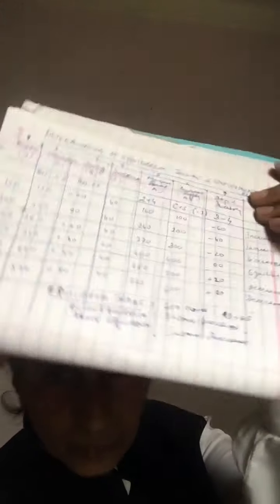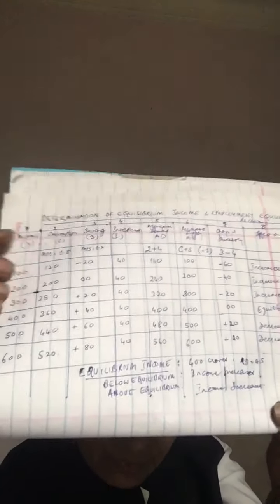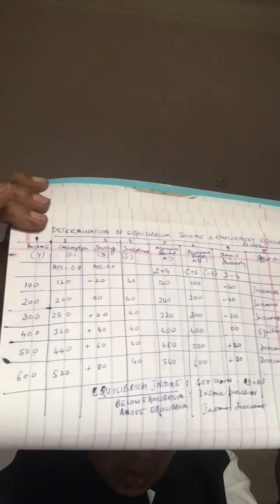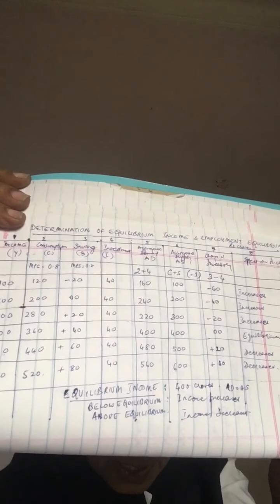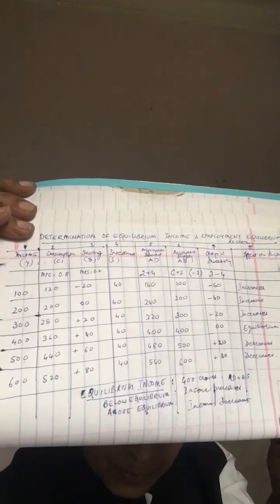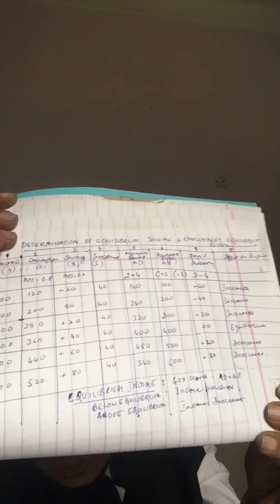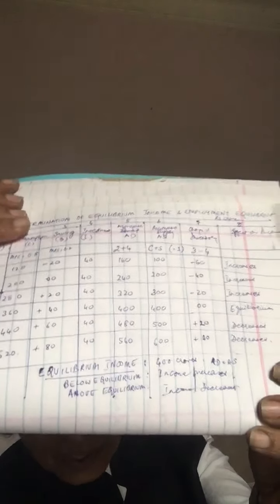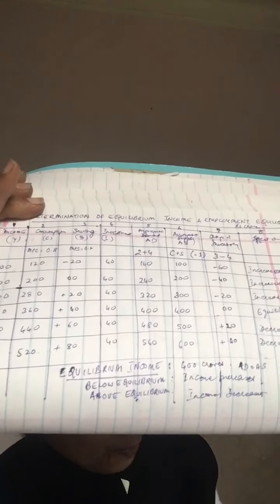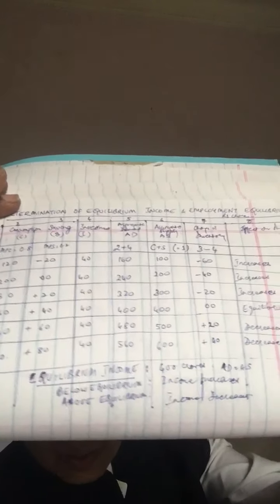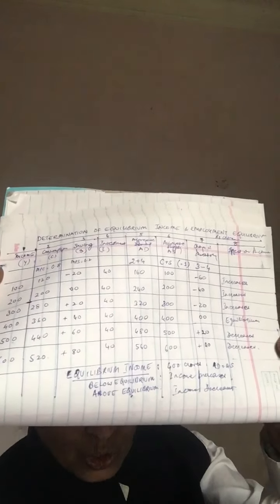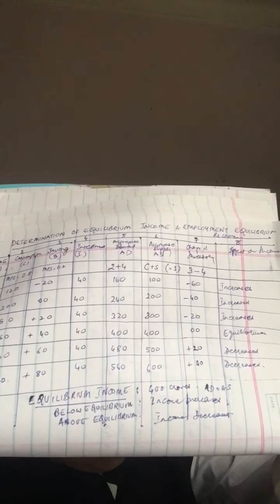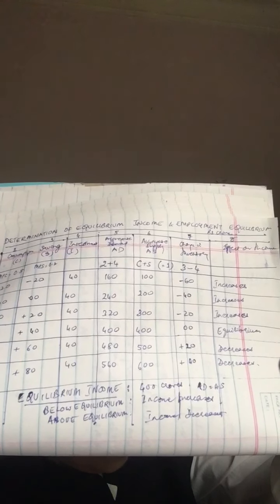So these are the two approaches and this can be really studied if you can see this table. It'll help you make the whole study very comprehendible. You'll be able to understand better if you look at this. Now by this table we can explain what is the determination of equilibrium income and employment.